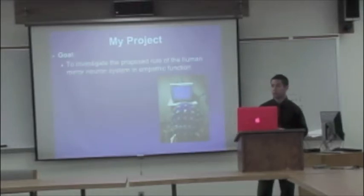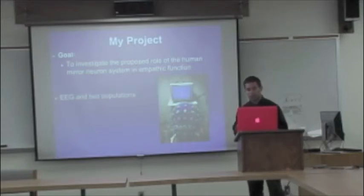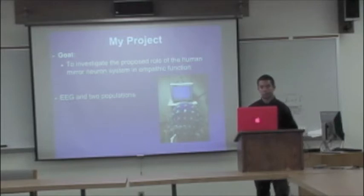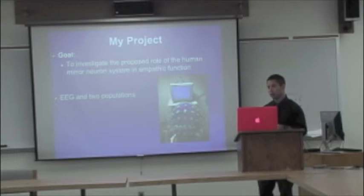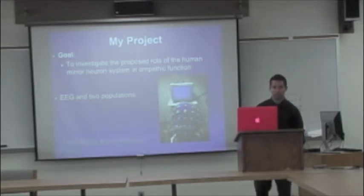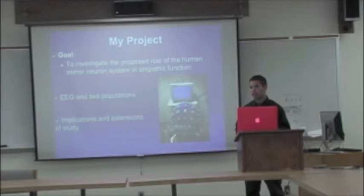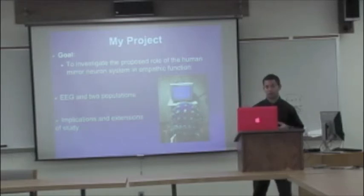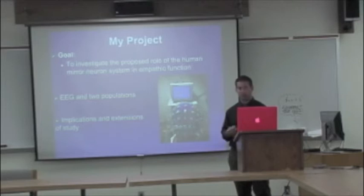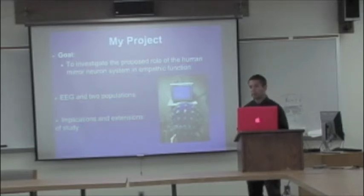My project goal was to investigate this proposed role of the human mirror neuron system in empathy. The way I decided to do it was to use EEG — electroencephalogram — as my main method of data collection. I wanted to take two opposing populations, one with very high empathic function and one with very low empathic function, run them through the same empathy test, and compare their activations. The reason I'm particularly interested in this is that if we can better understand the neurobiological components of empathy and social functioning, we might be able to better understand how to help and understand the basis of disorders like Asperger's and autism that have social dysfunction.